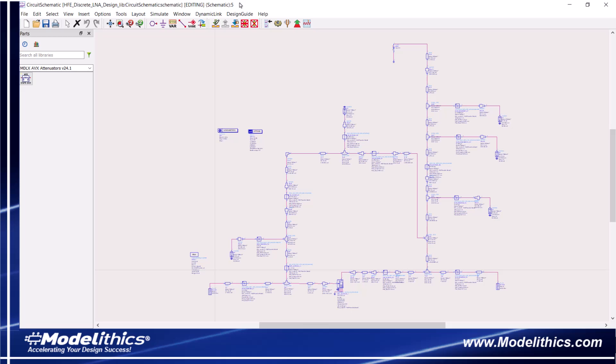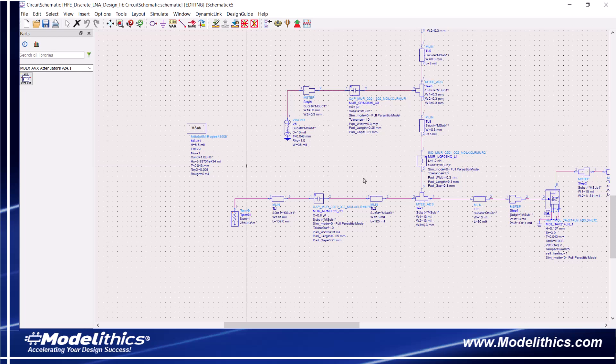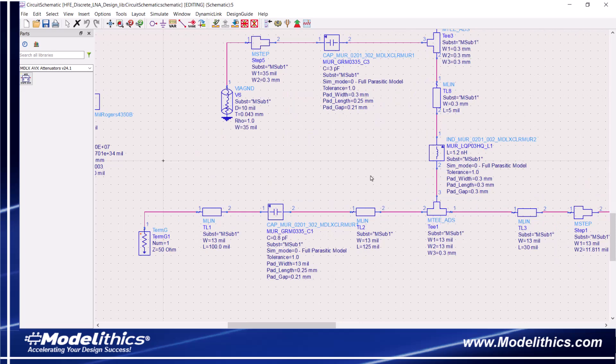This is the schematic of the complete LNA design. We see our transistor model right here. Now for an LNA circuit, the input matching network should be designed to allow the LNA to achieve low noise figure. For this LNA, we'll place a series capacitor and a parallel inductor at the input of the transistor. These components serve as the input matching network.